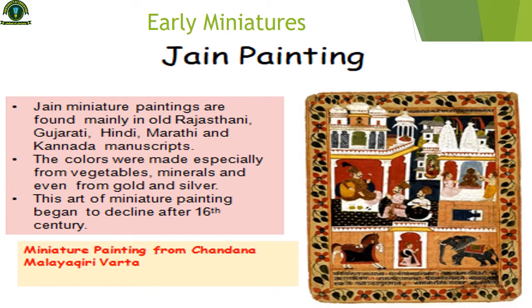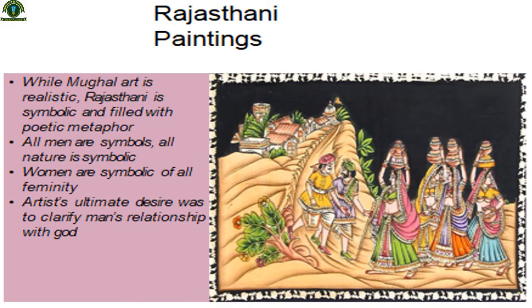The composition and perspective were not the focus, and the figures' sizes were not accurate. The drawing is not that detailed and they have used a lot of dark colors. While Mughal art is realistic, Rajasthani is symbolic and filled with poetic metaphor. All men, all nature, and all women are symbolic — women are symbolic of all femininity. The artist's ultimate desire was to clarify man's relationship with God.